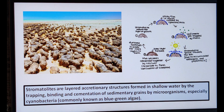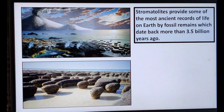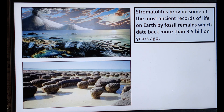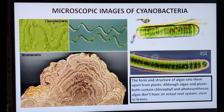Gradually the layers of stromatolites grow and become larger in nature. Coming to the age of a stromatolite: around 3.5 billion years ago, stromatolites dominated seas around the world, and thus they provide some of the most ancient records of life on Earth, by fossil remains which date back more than 3.5 billion years.